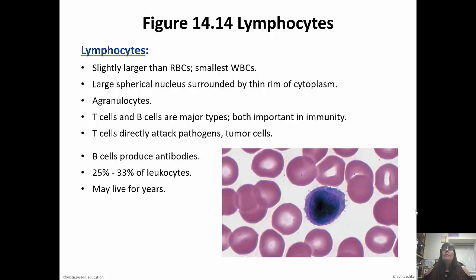If you need to remember the order of white blood cells by number, remember: Never Let Monkeys Eat Bananas — neutrophils, lymphocytes, monocytes, eosinophils, basophils. That is the order from most numerous to least numerous.